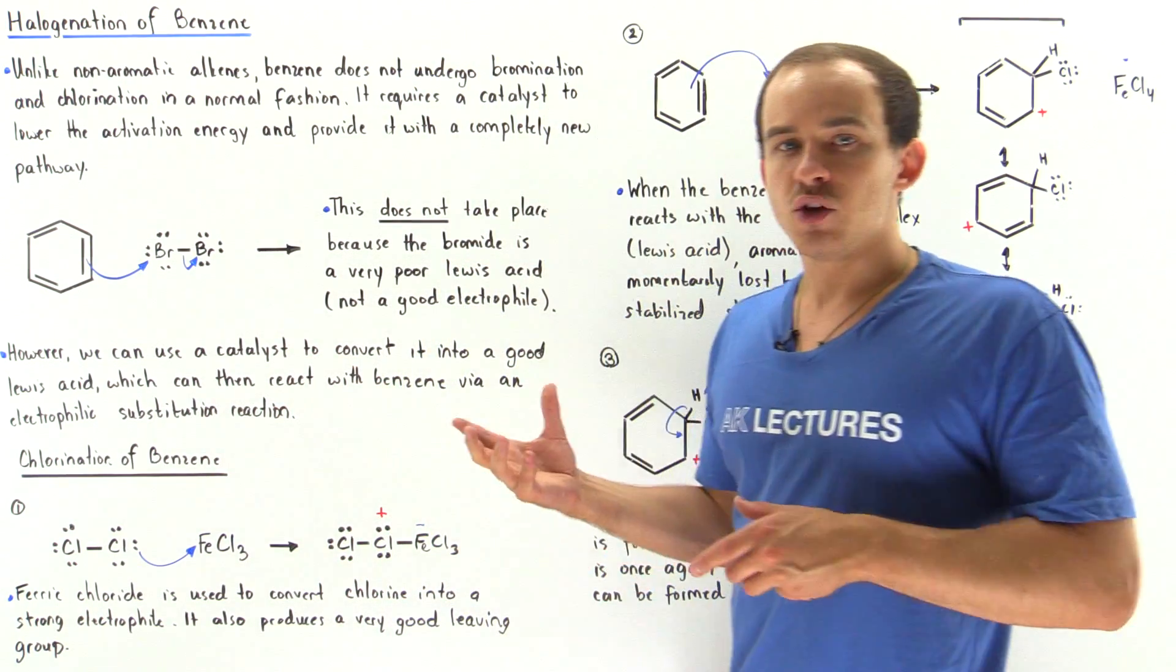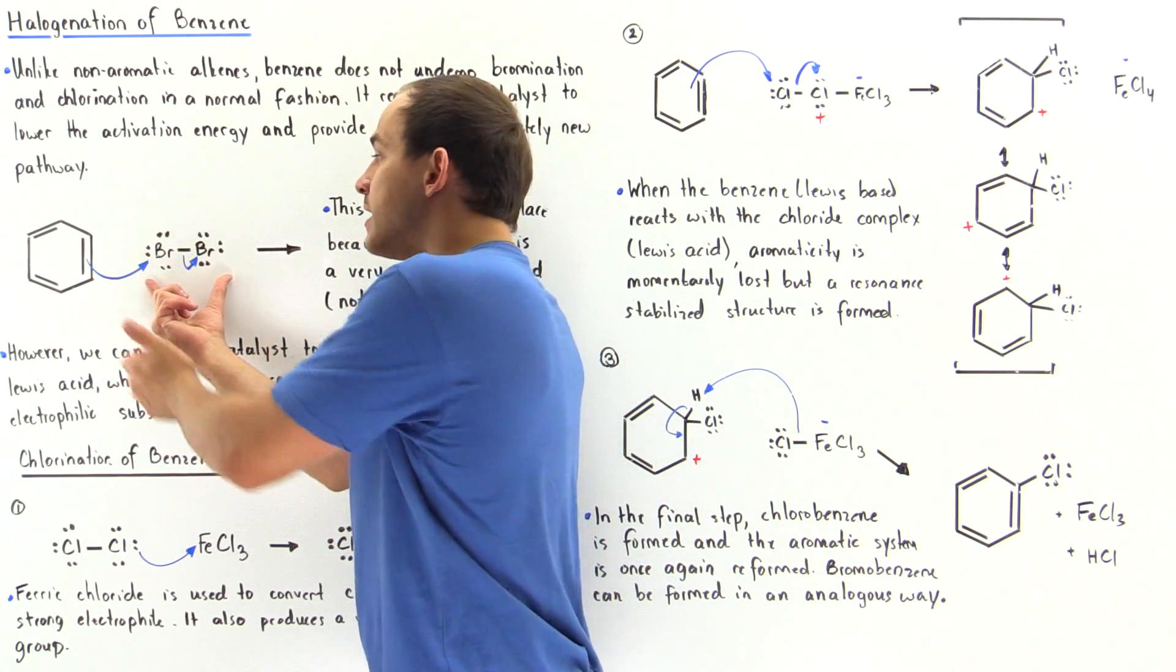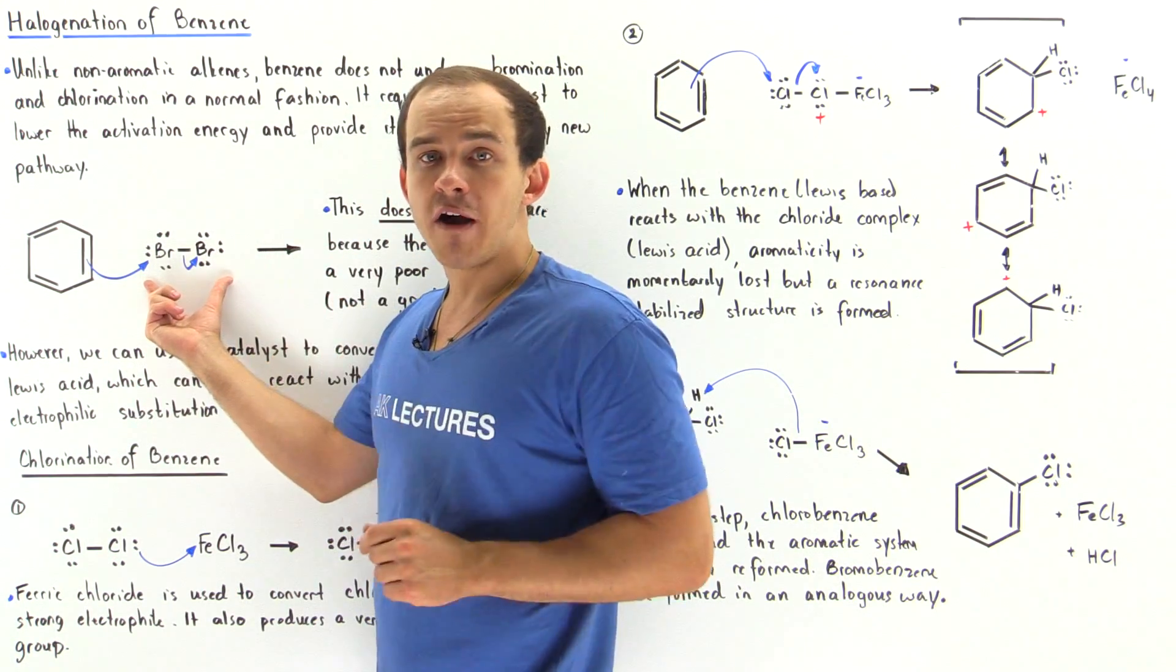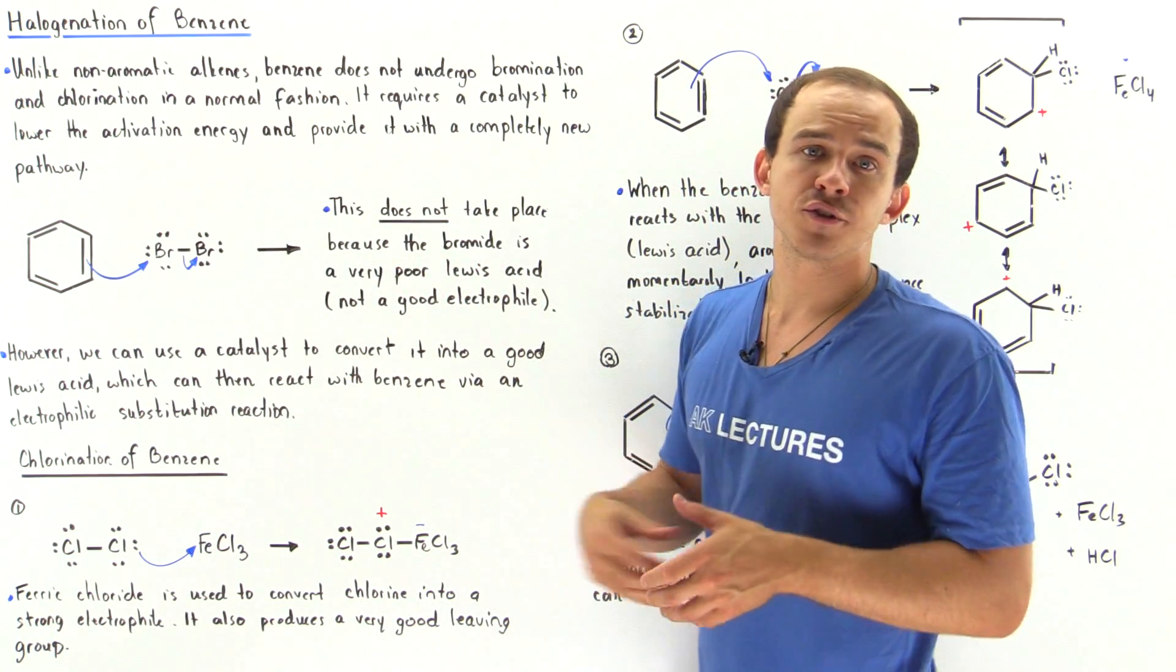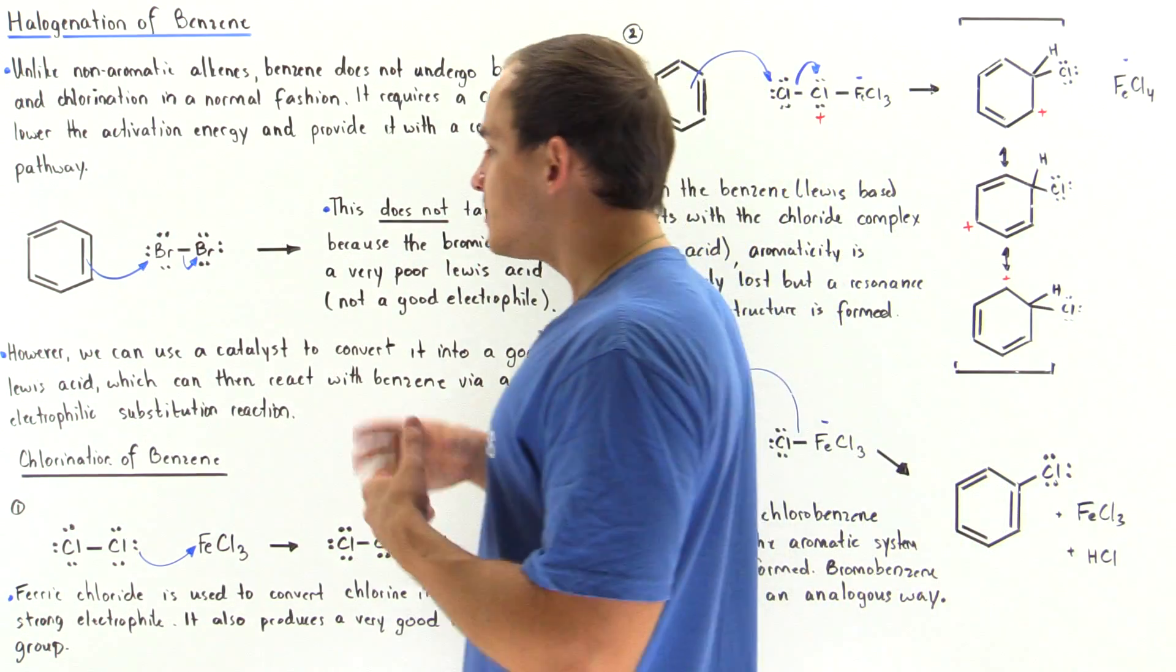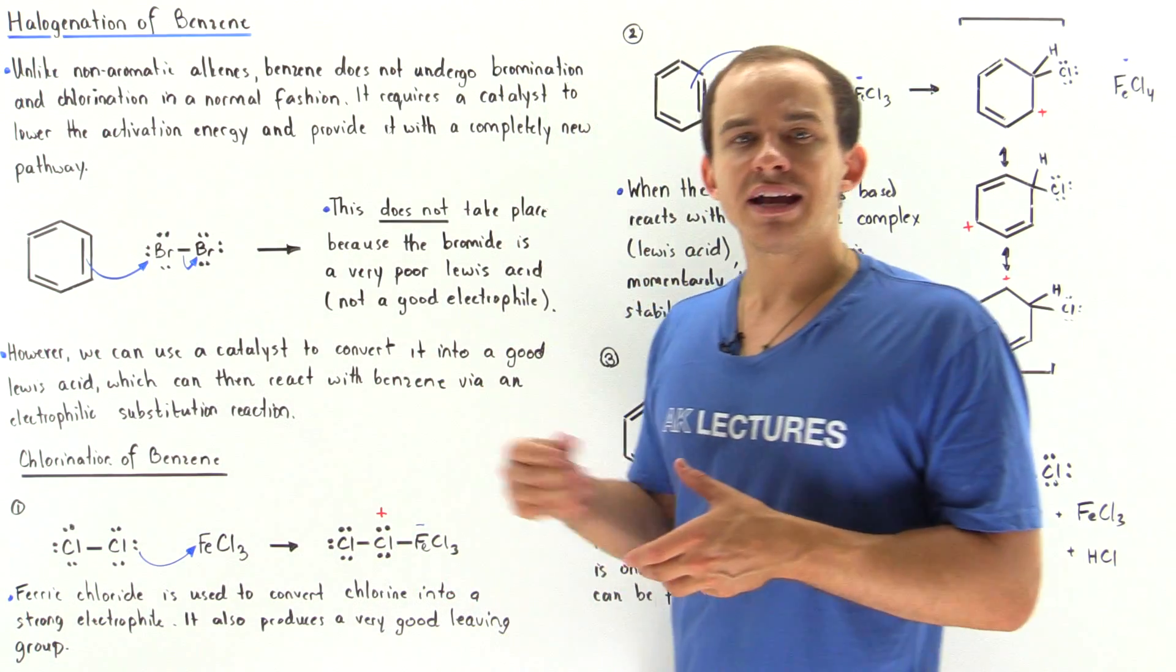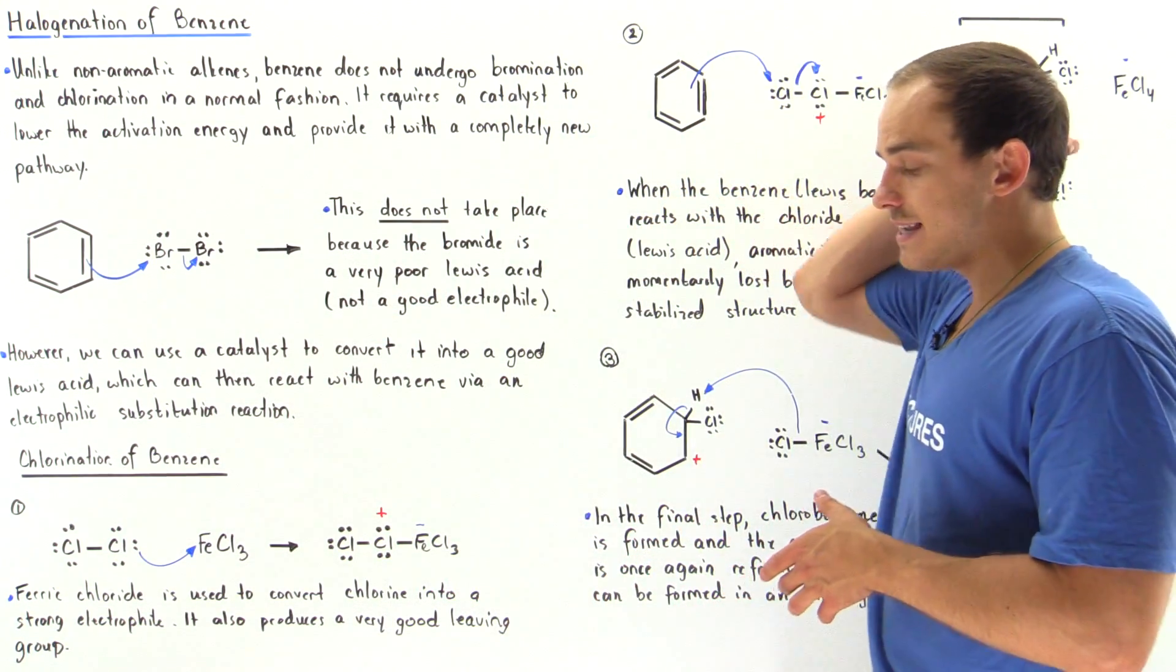What we have to do is use a catalyst to first transform this bad electrophile, this poor Lewis acid, into a good electrophile, into a strong Lewis acid. Let's take a look at the reaction mechanism for the chlorination of benzene.